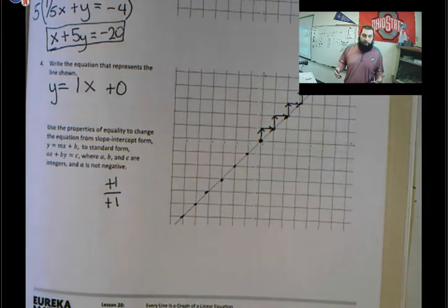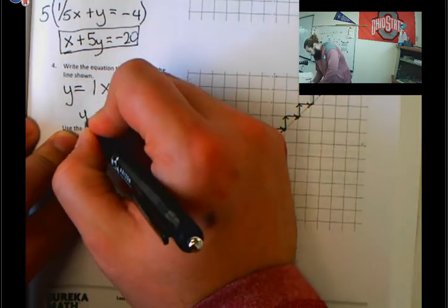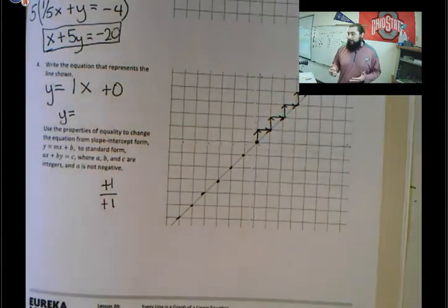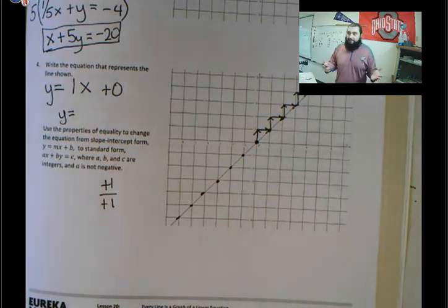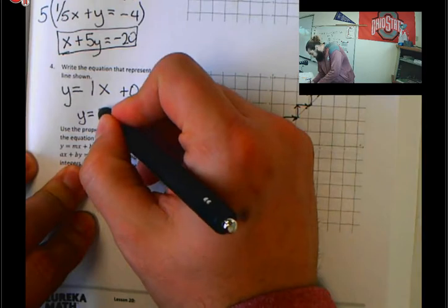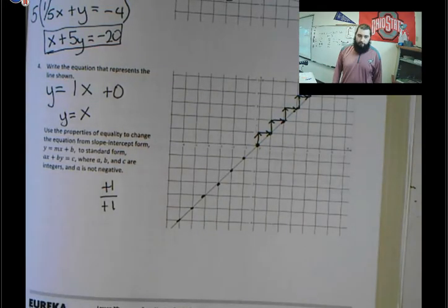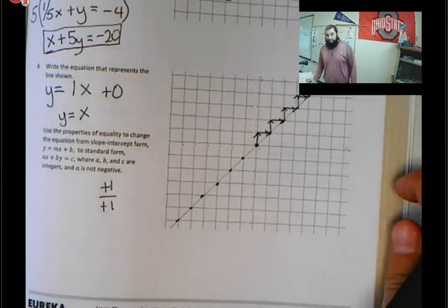Technically our equation can look like y equals 1x plus 0, but we can simplify. When the coefficient of a variable is 1, we don't have to write it. And when we're adding or subtracting 0, we don't have to write that either. So we simplify this equation to y equals x. From here, we're going to take y equals x and put it into standard form.